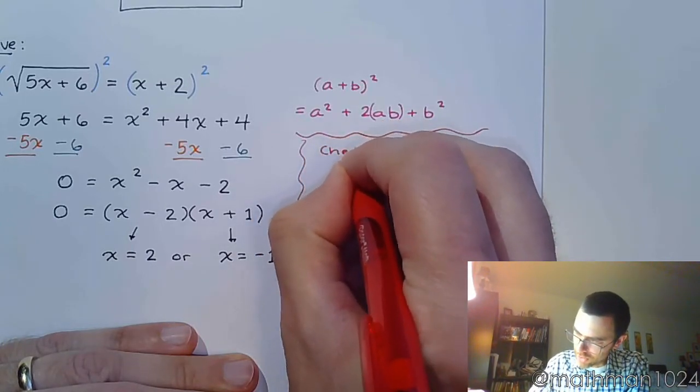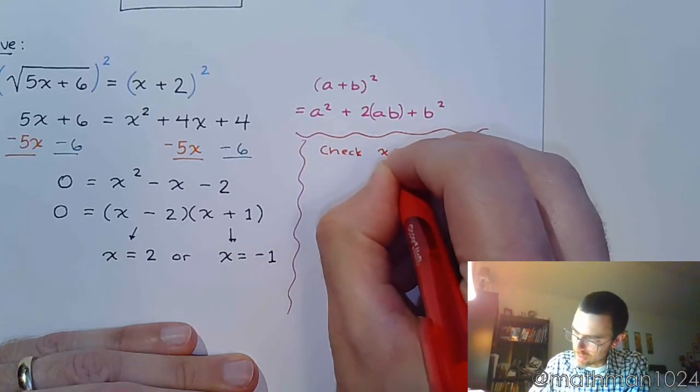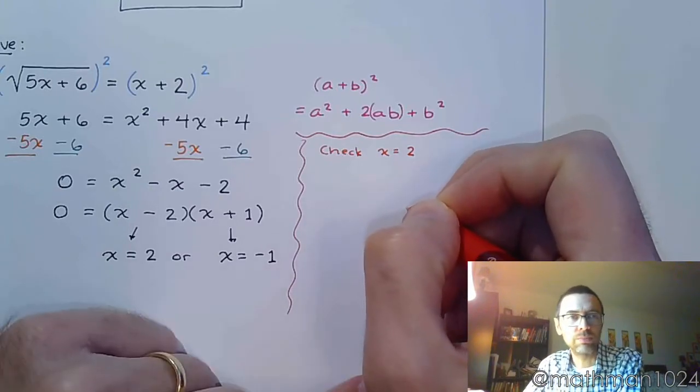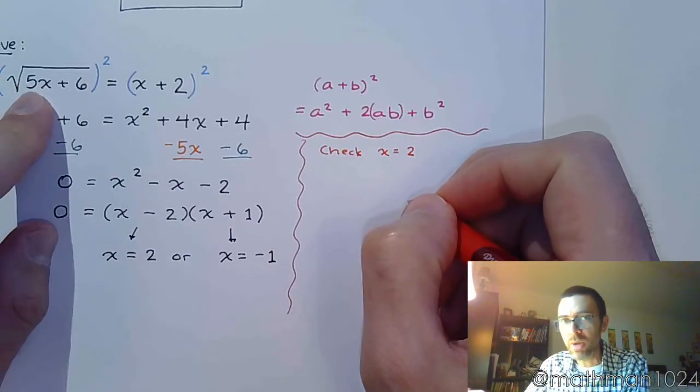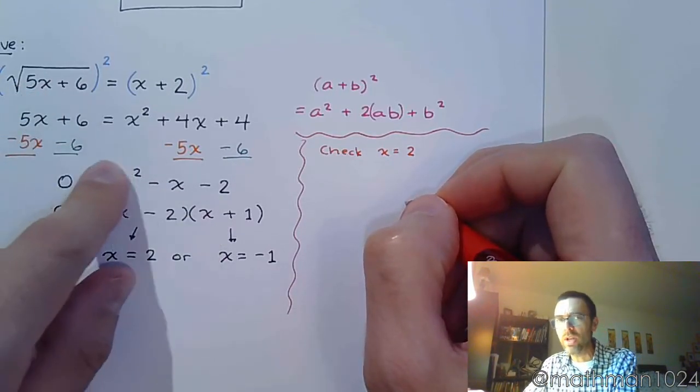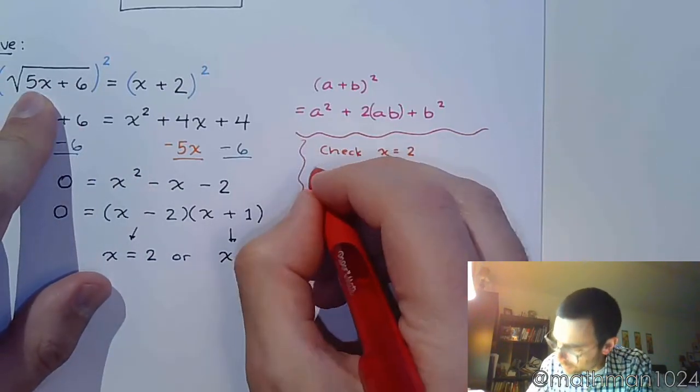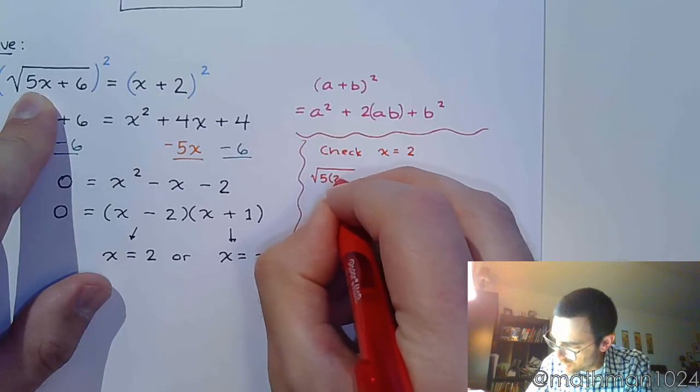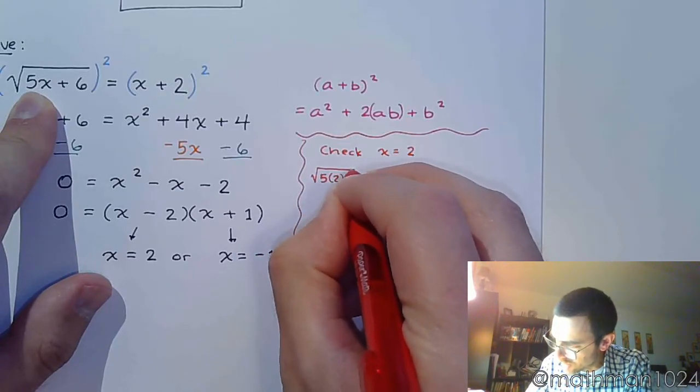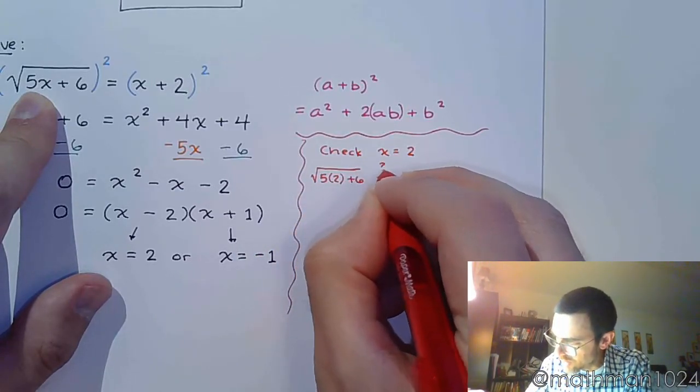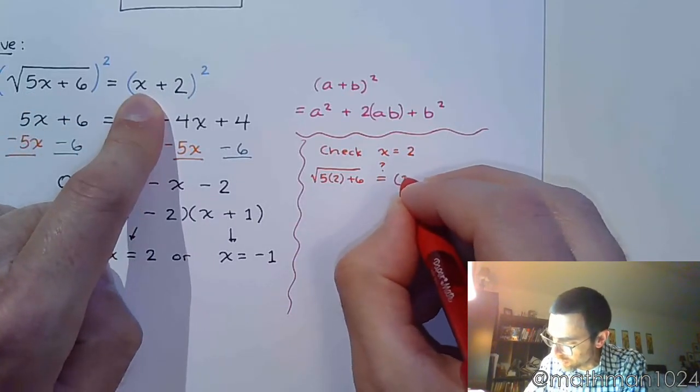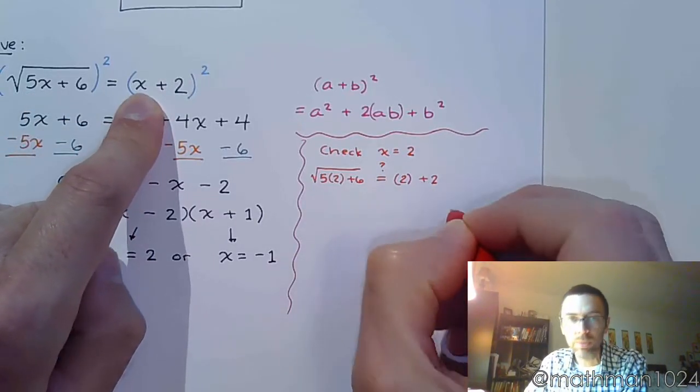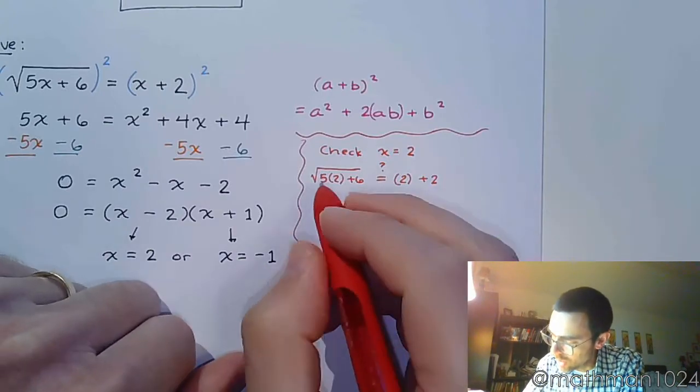So let's first check x equals 2. So I'm going to plug that into my original equation. Not anything down here. Always go back to the original. I want to see that if I do the square root of 5 times 2 plus 6, does this equal 2 plus 2?